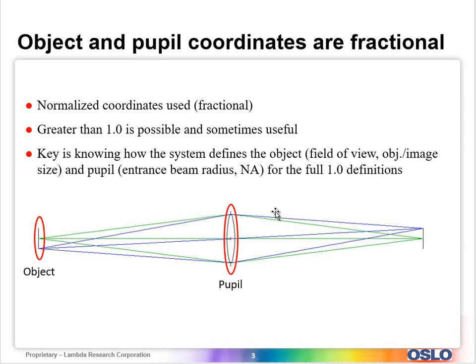The pupil is a little more complicated to talk about because many systems will have a pupil that is internal to the system, which requires understanding how Oslo needs to launch rays through the system to fill the pupil correctly. That is covered in a separate set of videos on getting light right through a system. The key is that 1.0 uses the definitions of the maximums for the pupil and object coordinates, so you must understand how you've set up the system for the field of view — whether you have object or image size or some angular metric.